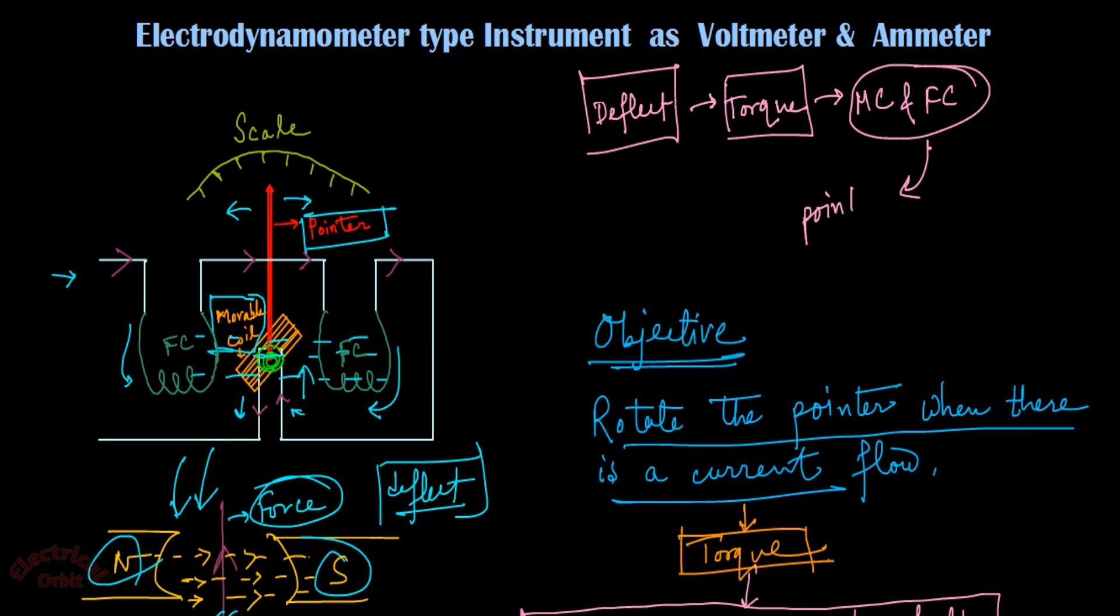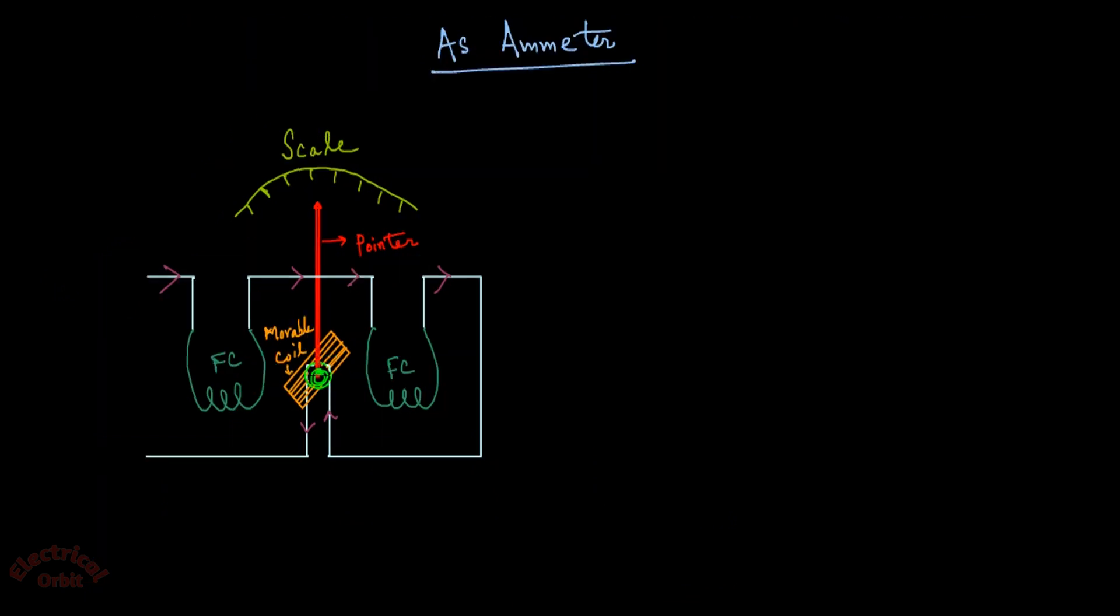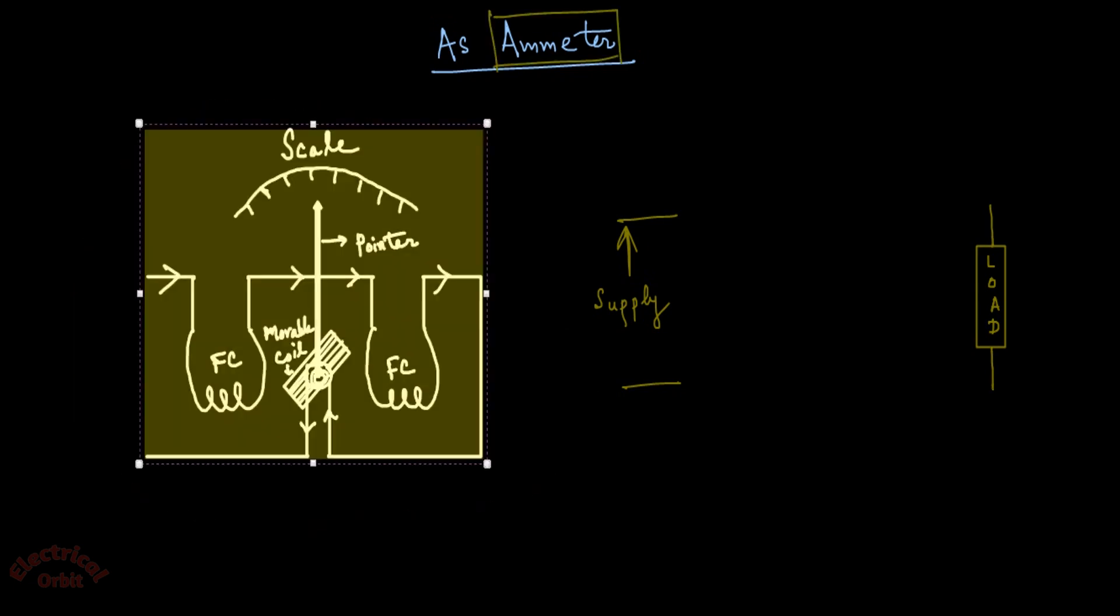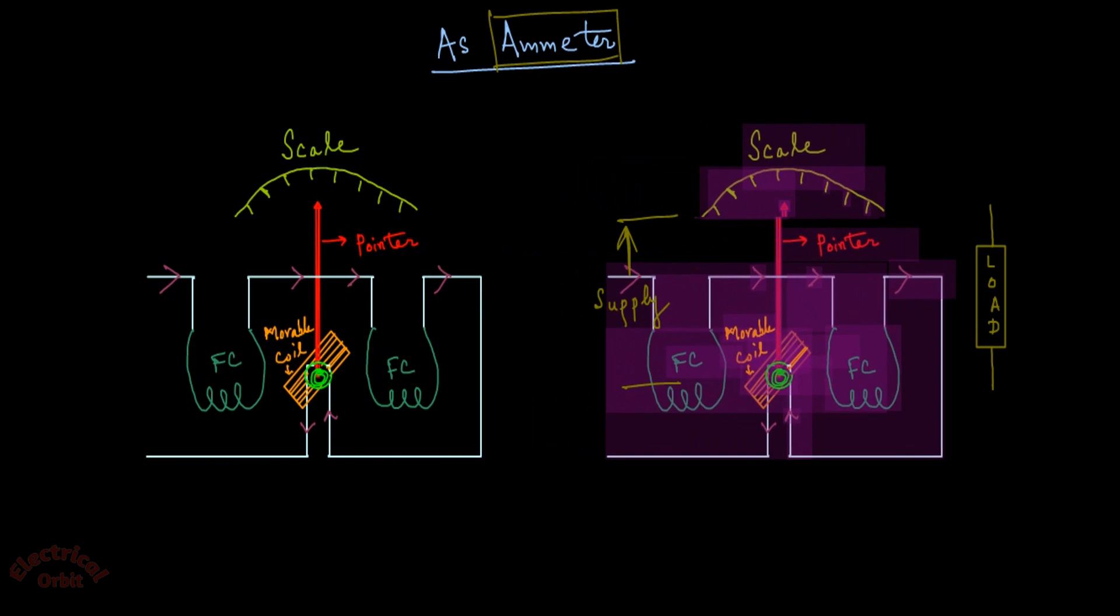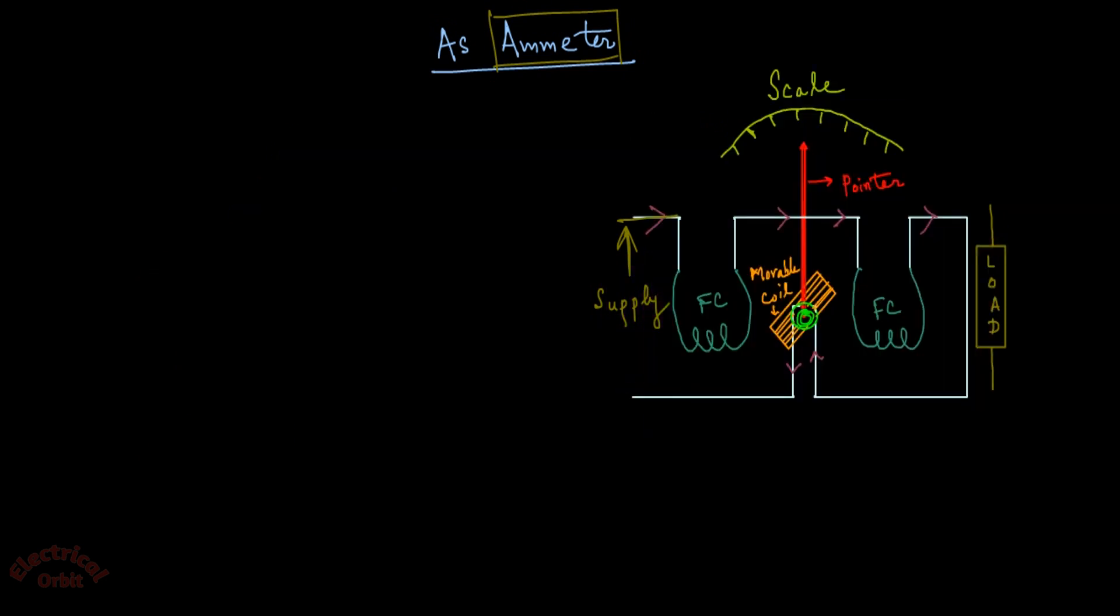Now we are going to use this as an ammeter. Suppose this is our supply and this is our load. We have to connect this electrodynamometer type instrument into this circuit as an ammeter. We are just taking it and moving it to this circuit.